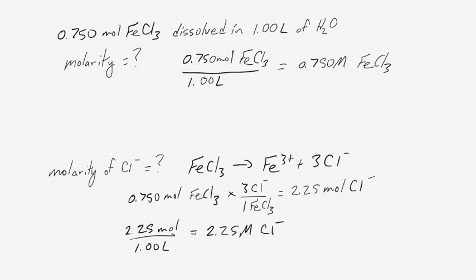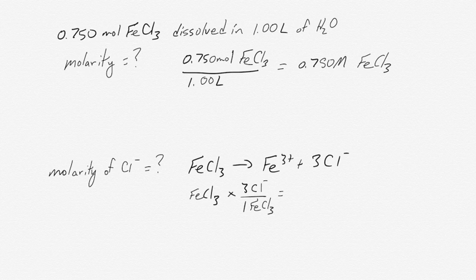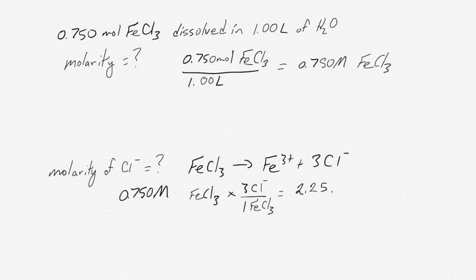And then we can say that 2.25 moles divided by 1.00 liters gives you 2.25 molar chloride ions. What we can do in addition to this is we can use mole ratios with concentrations as well as with moles. So we can say we know that we have 0.750 molar FeCl3. And we know that there are 3 moles of chloride for every 1 mole of FeCl3.